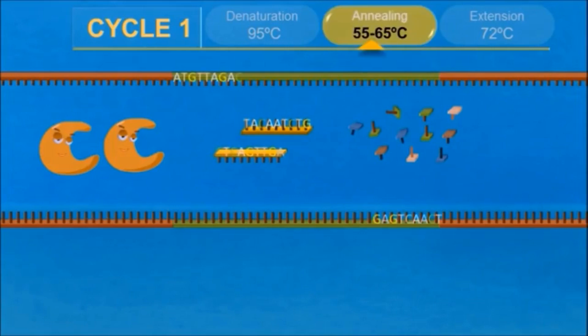Second step is annealing. It is pairing of primers to the single-stranded DNA segment. The primers have to be designed as per the requirement. This step requires a temperature of about 55 degrees Celsius.